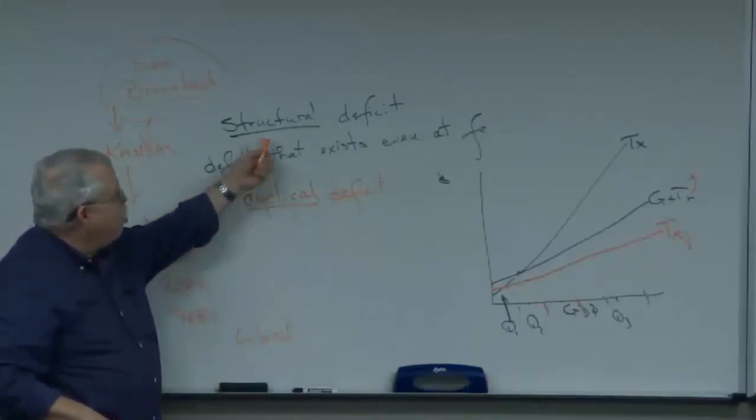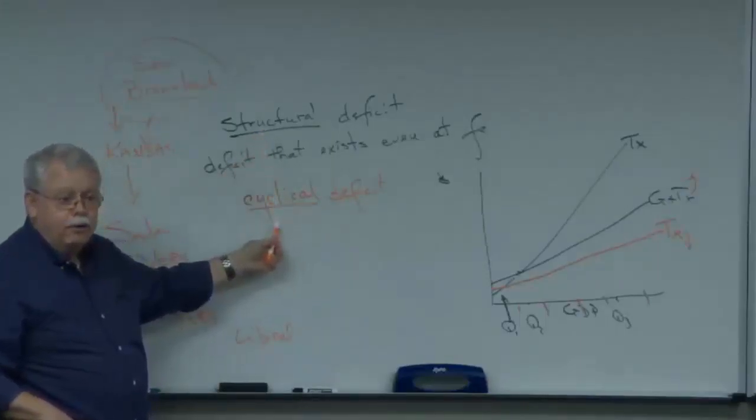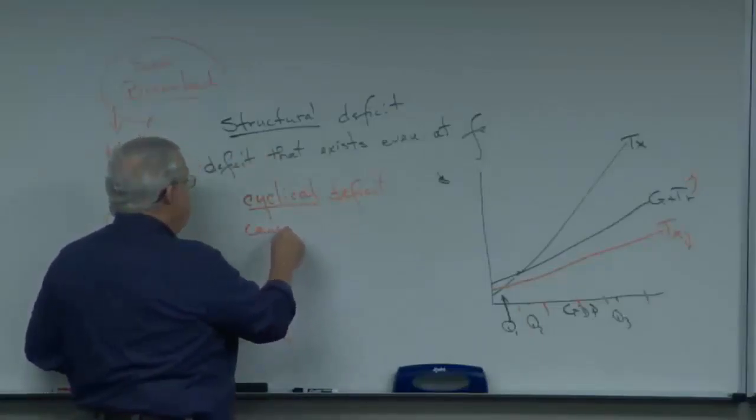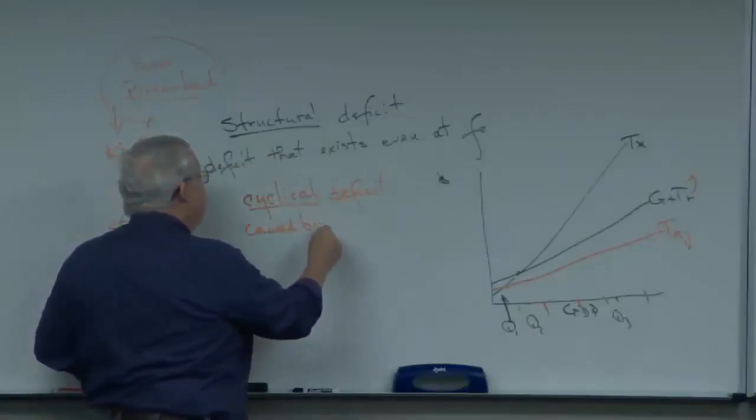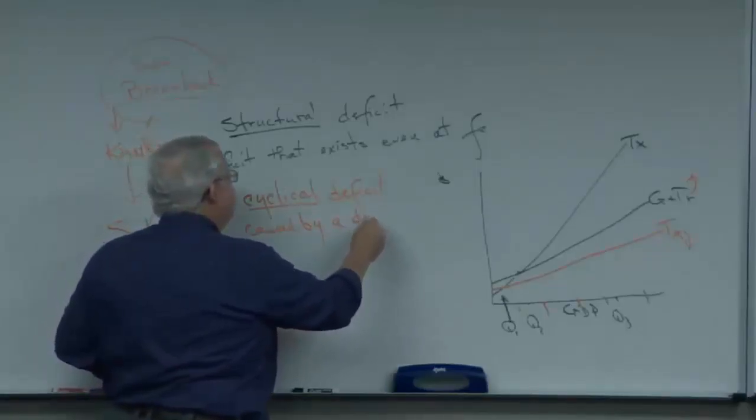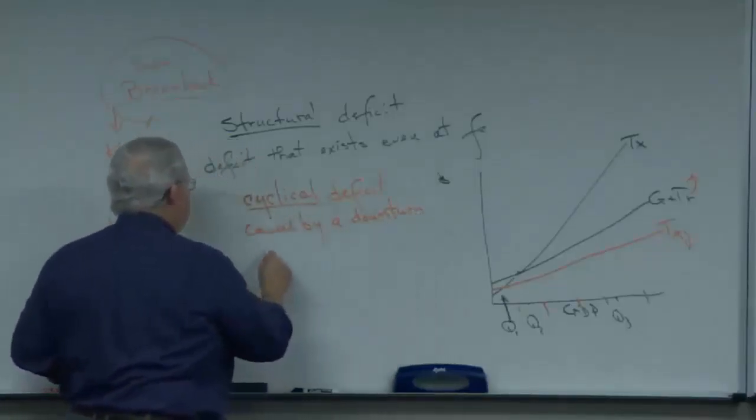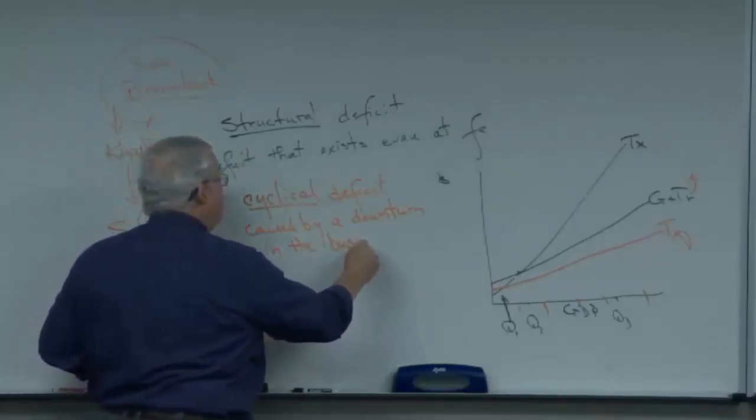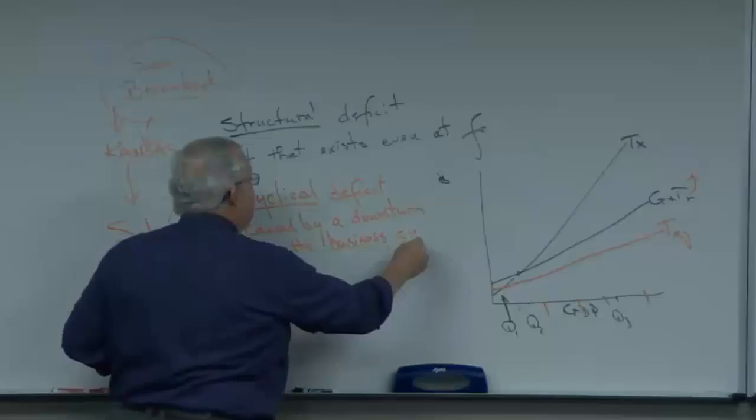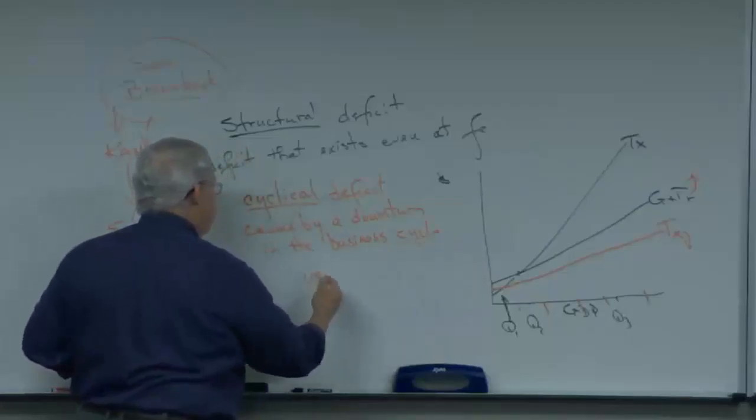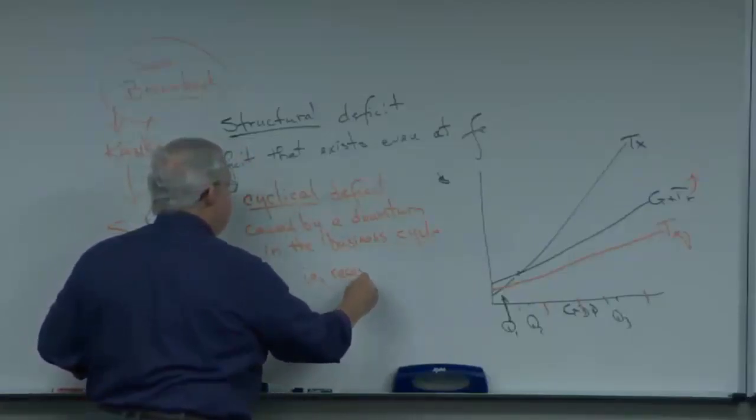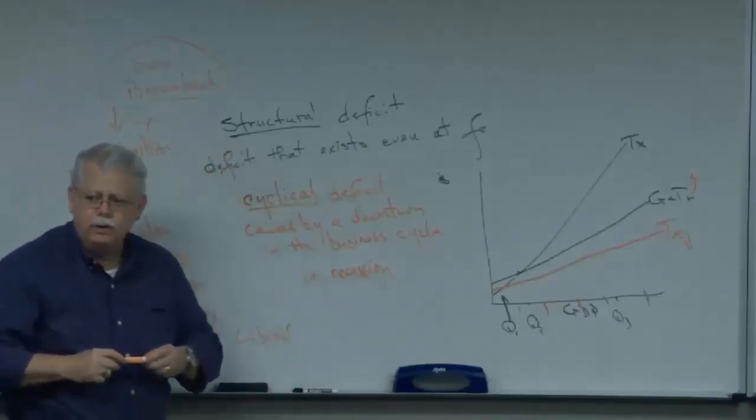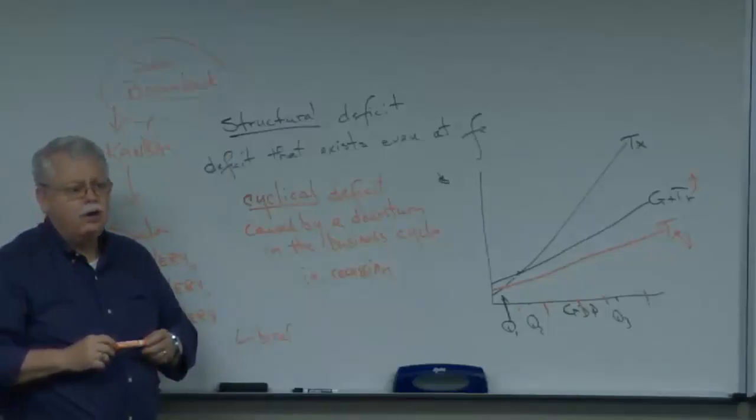The amount that's greater than the structural deficit is the cyclical deficit, that's caused by a downturn in the business cycle. That's why we call it cyclical, i.e. recession. How are we doing? Is that fuzzy? Is that clear?